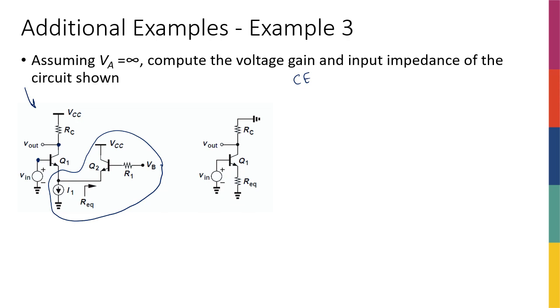Then it means that I have some sort of a resistance at the emitter, so I can actually replace the entire thing here with some resistance, and therefore this is a common emitter with degeneration resistance at the emitter.